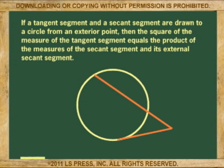If a tangent segment and a secant segment are drawn to a circle from an exterior point, then the square of the measure of the tangent segment equals the product of the measures of the secant segment and its external secant segment.